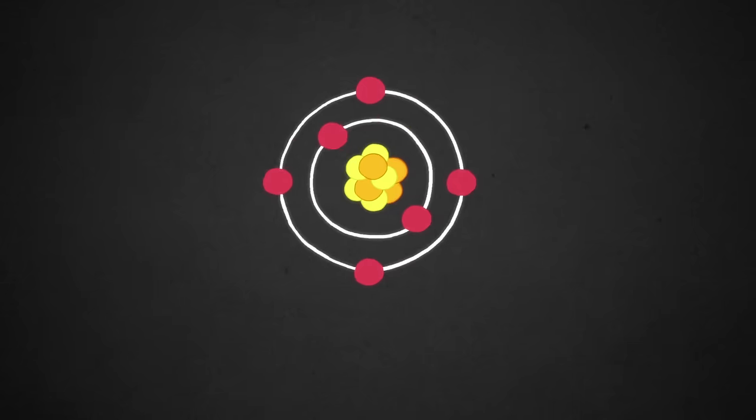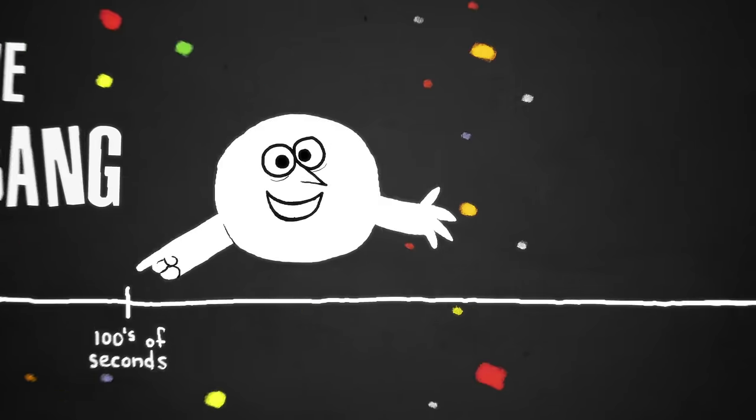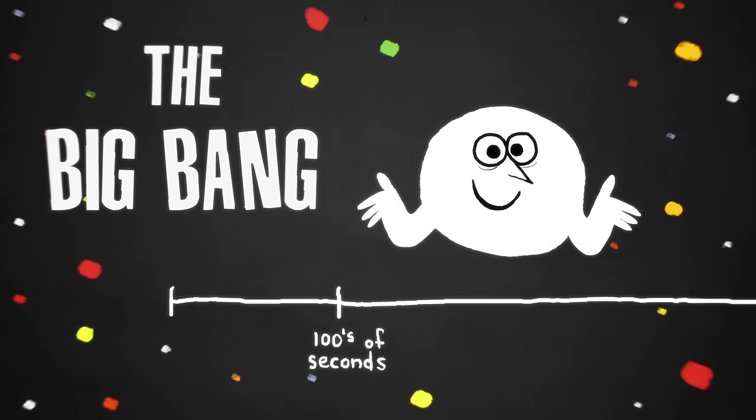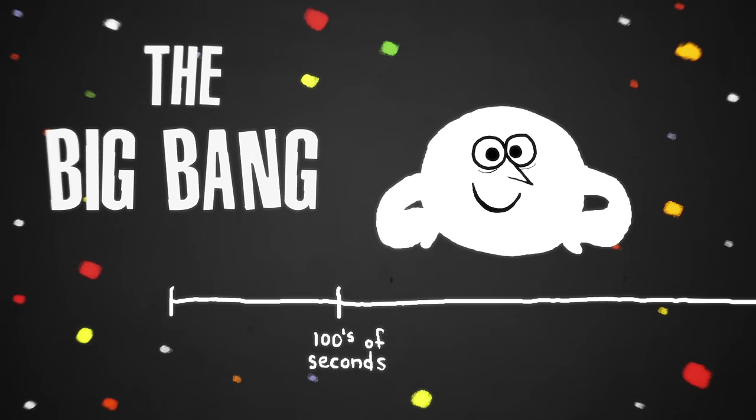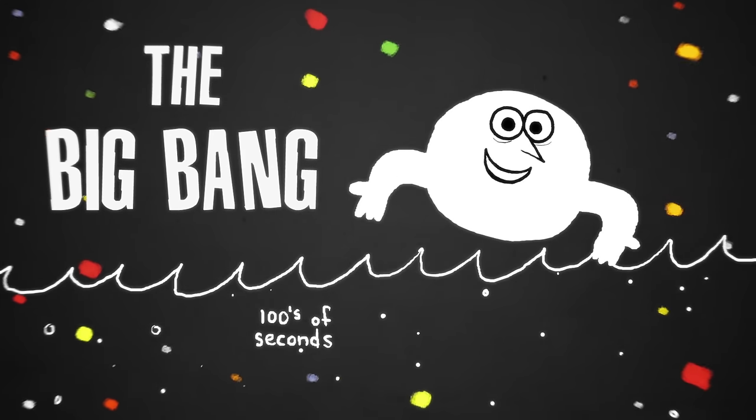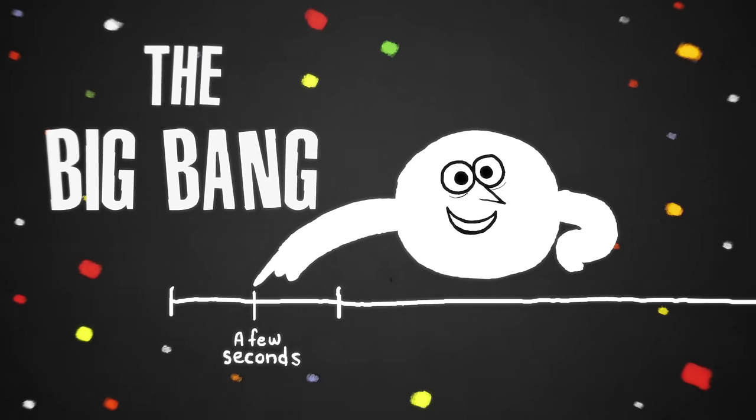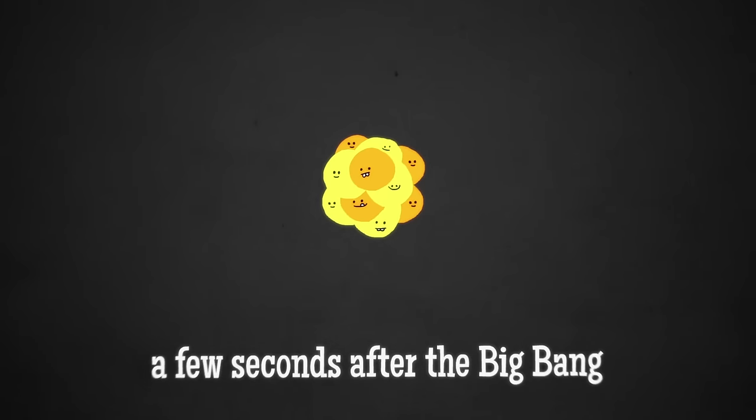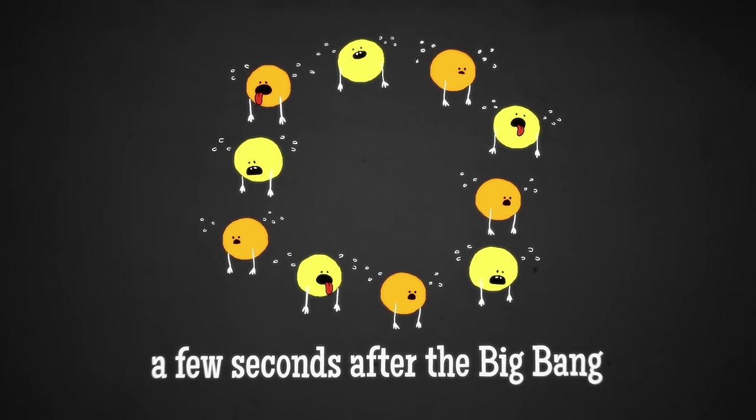Today, things are largely made up of atoms. But hundreds of seconds after the Big Bang, it was too hot for electrons to join atomic nuclei to make atoms. Instead, the Universe consisted of a swirling sea of subatomic matter. A few seconds after the Big Bang, it was hotter still. Hot enough to overpower the forces that usually hold protons and neutrons together in atomic nuclei.